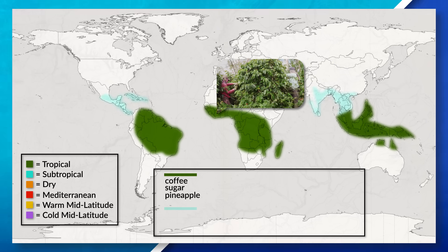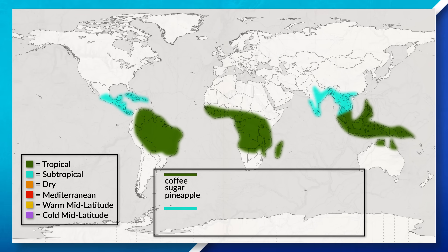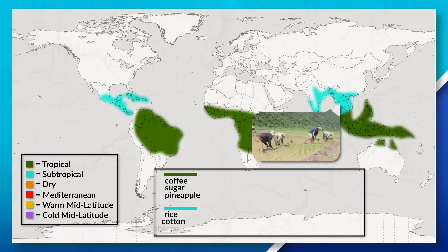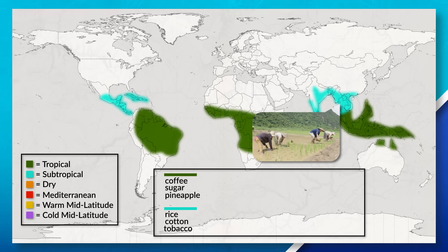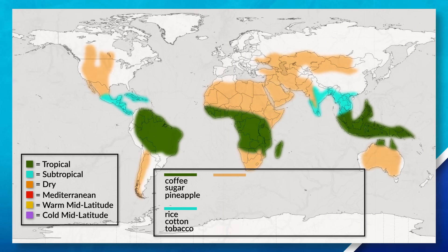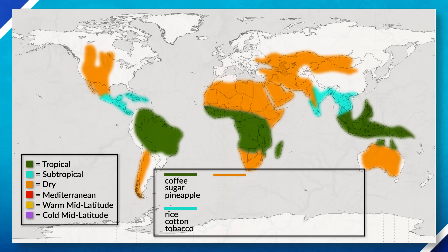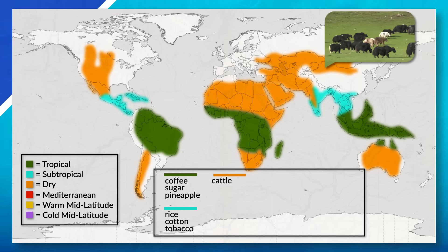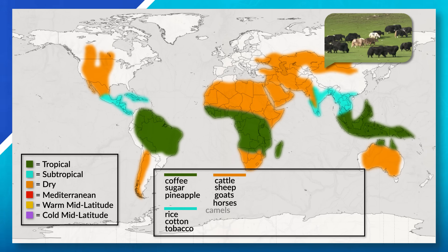If we look at subtropical climates such as the West Indies or parts of Indonesia, we'll often see rice, cotton, or tobacco. In the grasslands and continental steppe that contain areas such as Mongolia, the western portion of the United States, or states located in northern Africa, we often see cattle ranching, sheep, goats, horses, or camels.